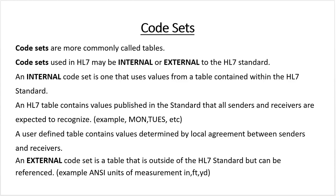A user-defined table contains values determined by local agreement between senders and receivers. So now there's a third possible table type. You've got internal — common things that everybody knows, built into the HL7 standard. An external code set is a table that is outside of the HL7 standard but can be referenced. For example, units of measurement like inches, feet, or yards — that's external but everybody knows it and you can pull it in. And for the user-defined table, if HIS and RIS need to agree on something locally, users can build their own user-defined table into HL7 and use that.